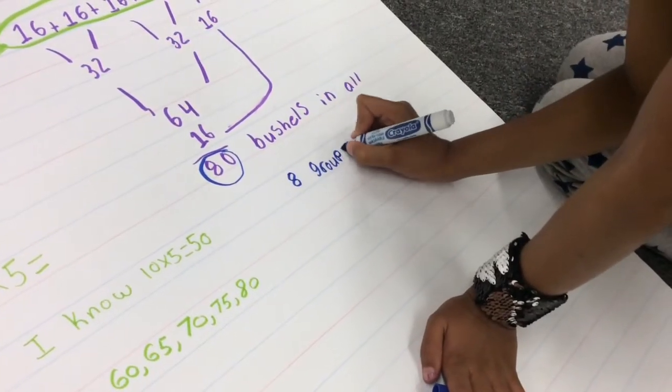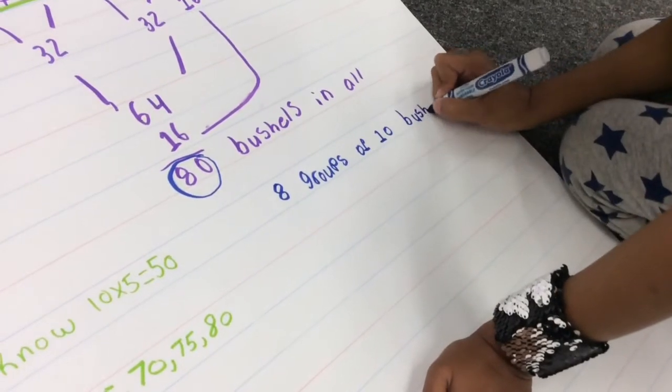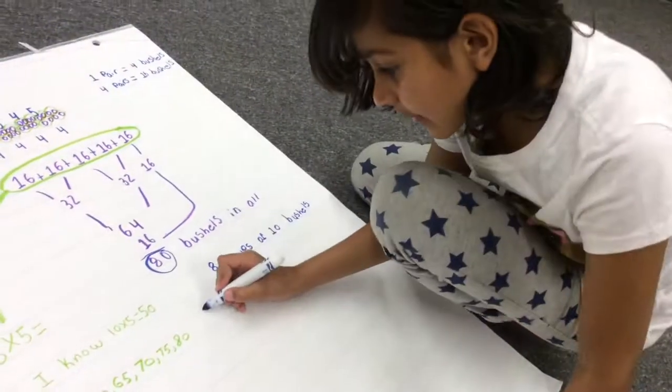Minha knew that eight groups of ten bushels is eighty bushels, so she made a ten frame to show the first ten bushels.